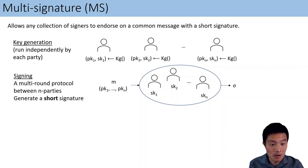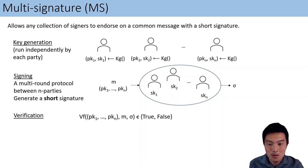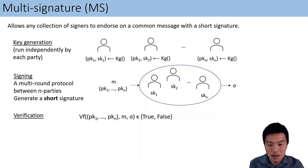By short, we mean that the length of the signature should be independent of the number of signing parties n. Verification takes a list of public keys, a message, and an alleged signature, and returns a boolean value.